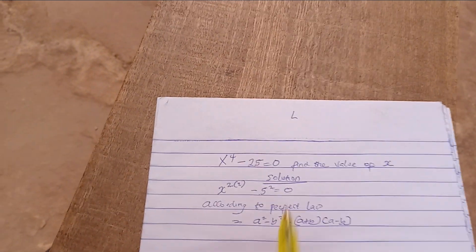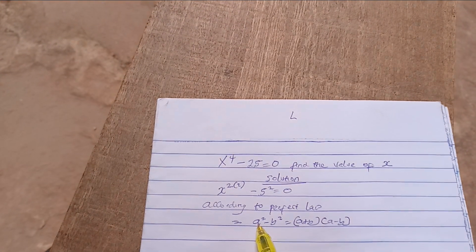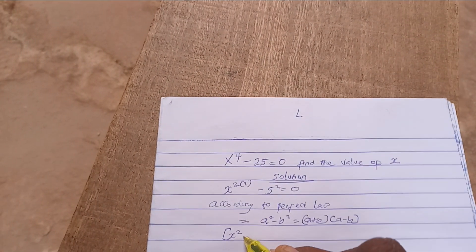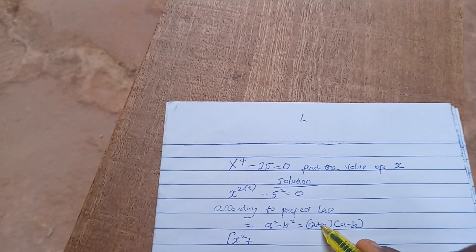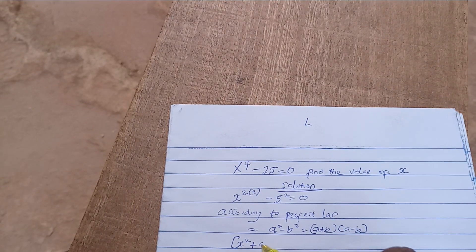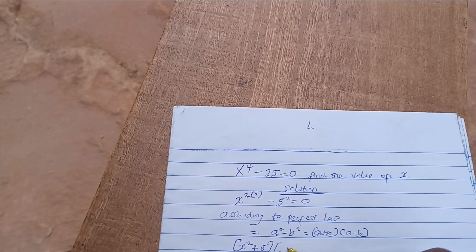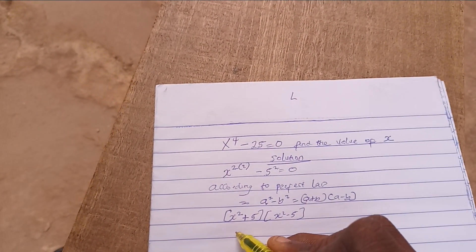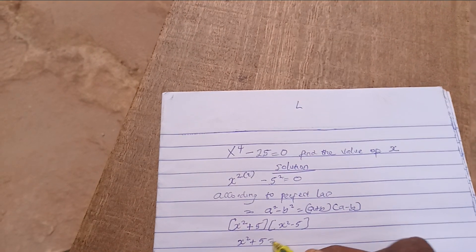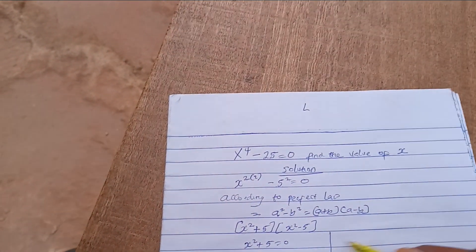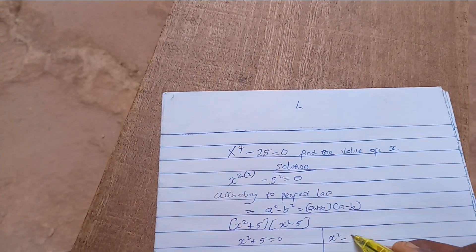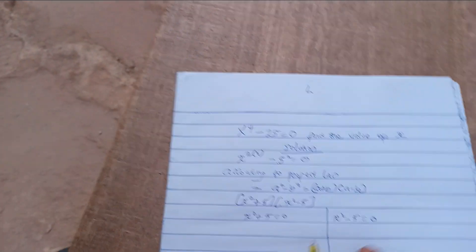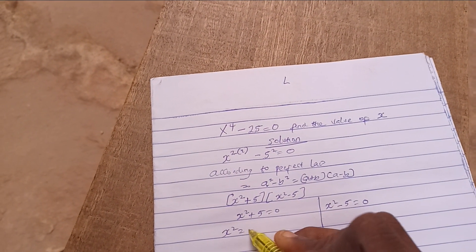Let's apply this rule to our expression. Our 'a' is x squared and our 'b' is 5. So we get x squared plus 5, times x squared minus 5, equals zero.